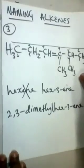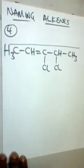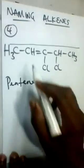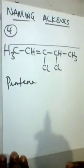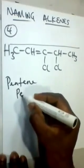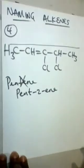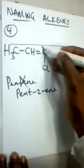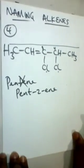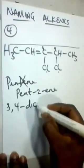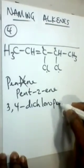Let's take our last example — number four. Draw a straight line across to identify the longest continuous chain. This includes five carbon atoms, so that's pentene. Numbering the carbon atoms, there is a double bond on carbon number two, therefore it's pent-2-ene. Now let's identify the functional groups. There are chlorine groups on carbon number three and carbon number four — written as 3,4-dichloro. Combining all of these, the full name is 3,4-dichloro-pent-2-ene.